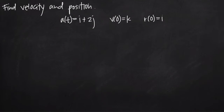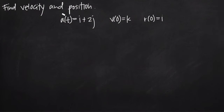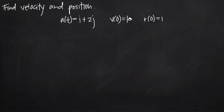Today we're going to be talking about how to find velocity and position vectors given an acceleration vector. In this particular problem, we've been given the acceleration function a(t) = i + 2j. Looking at the i and j components, we know this is a vector function for acceleration. We've also been given two initial conditions: v(0) = k, which tells us that when we plug 0 into the velocity function, we get k back. And r(0) = i, which tells us that when we plug 0 into the position function r(t), we get i back.